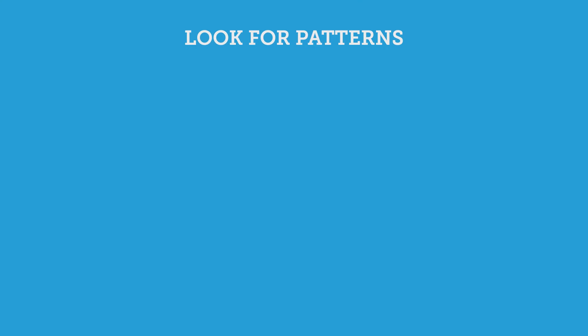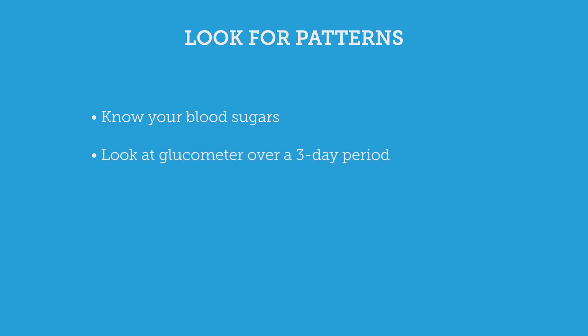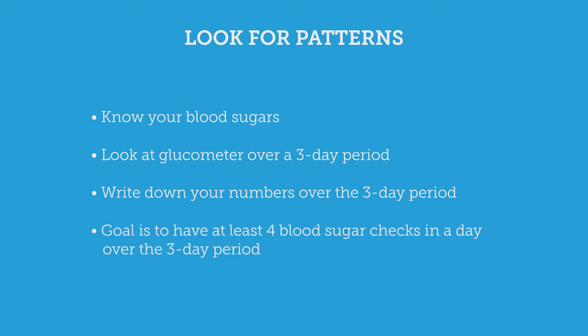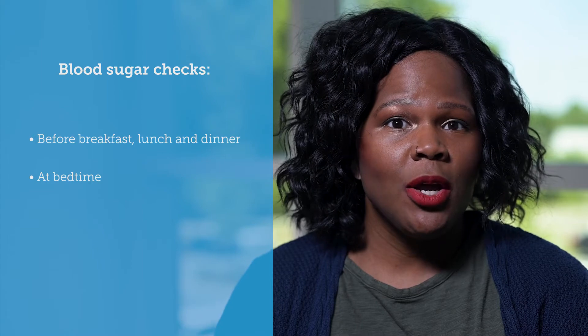That way you don't have to wait until your visit in three months to make some adjustments if you're noticing high or low blood sugars. The first thing you want to do is look for patterns. To look for patterns, you have to know what your blood sugars are — the more data you have the better. One way is to look at your glucometer over the past three days and write down your numbers. Your goal is to have at least four blood sugar checks in a day over those three days. You want checks before meals — breakfast, lunch, and dinner — and then also at bedtime.